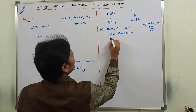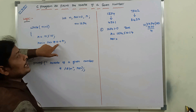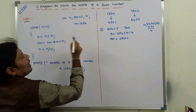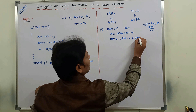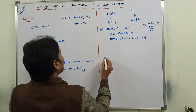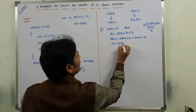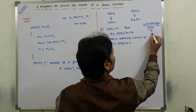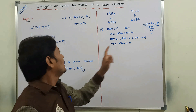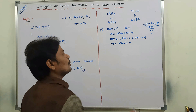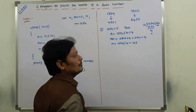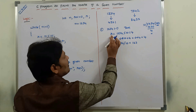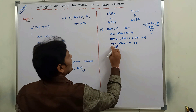Next: rev is equal to rev into 10 plus r. Initially rev value is 0. So 0 into 10 plus r — r value in this step is 4 — so 0 plus 4 equals 4. Next: n is equal to n divided by 10. 1234 divided by 10 returns the quotient value, which is 123. So after iteration 1: r = 4, rev = 4, n = 123.